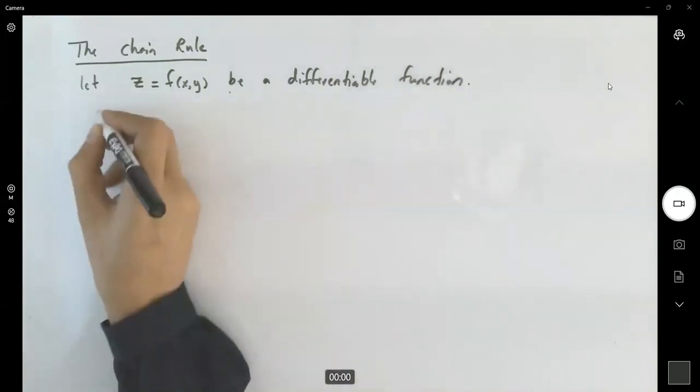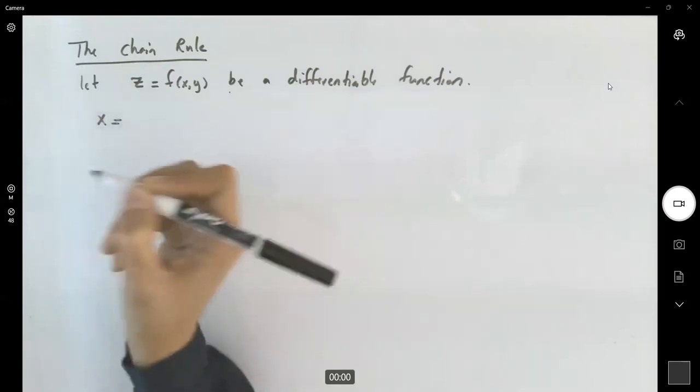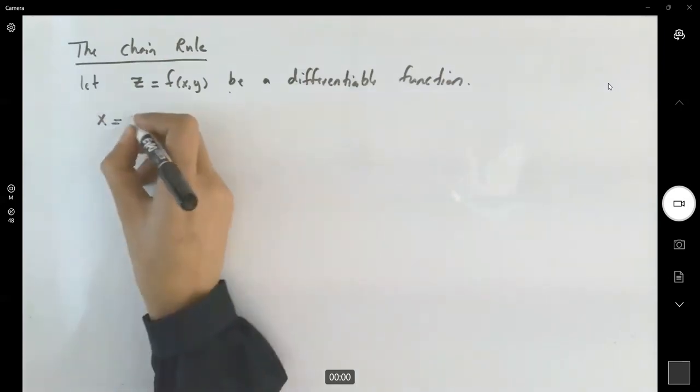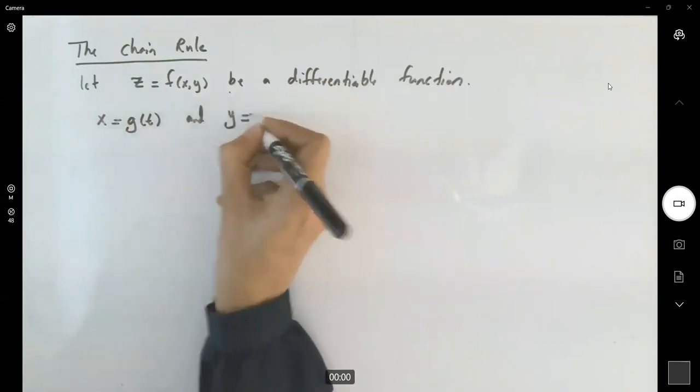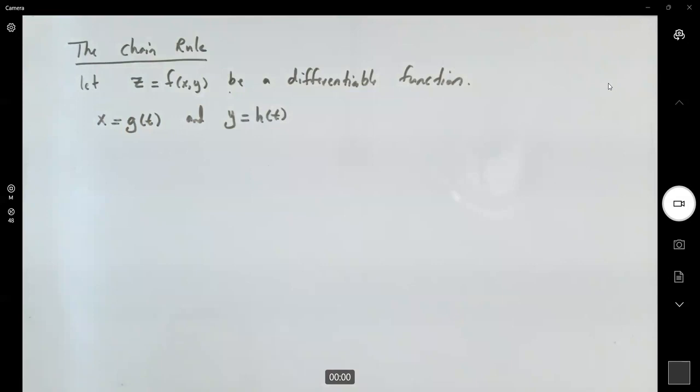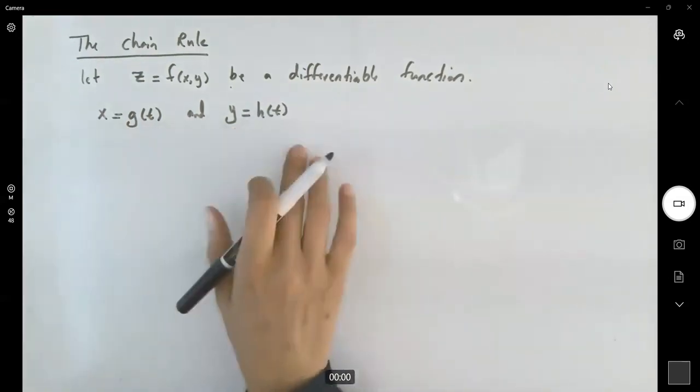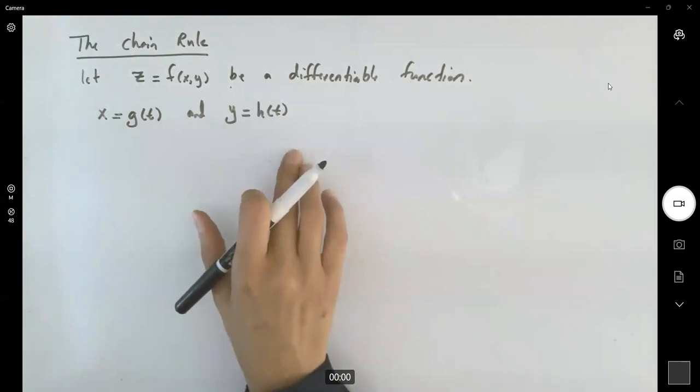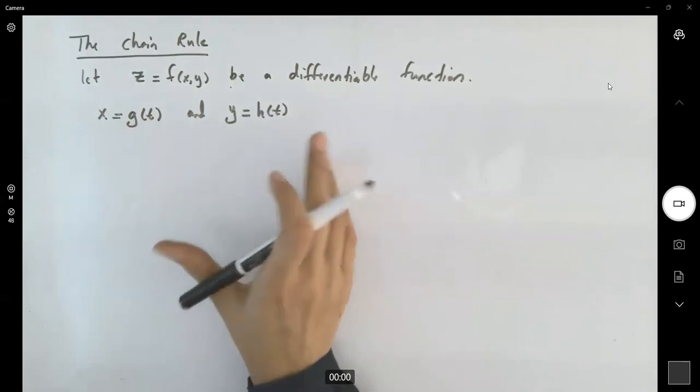At the same time, x is a function of a third variable like t, and y also depends on the third variable t. So t represents a new variable. It can be time, it can be heat, it can be angle, totally up to the question you're working with.